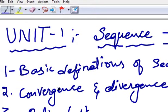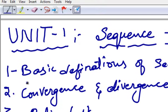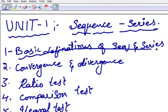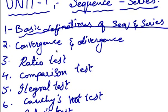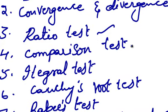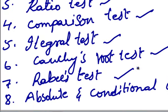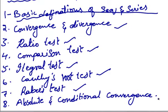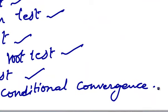The first topic is basic definitions of sequence and series. Second topic is convergence and divergence. Third ratio test, comparison test, integral test, Cauchy's root test, Raabe's test and eighth and last topic is absolute and conditional convergence.